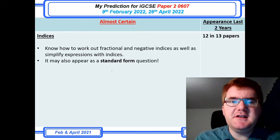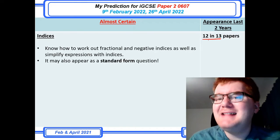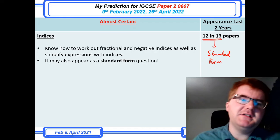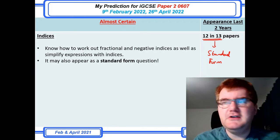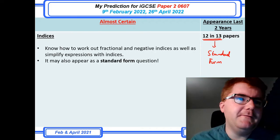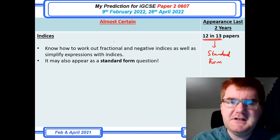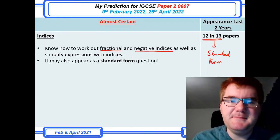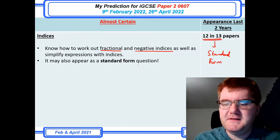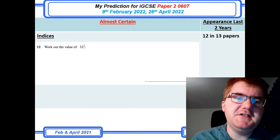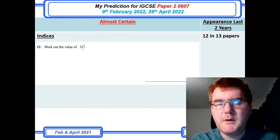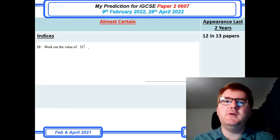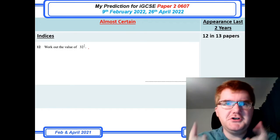On to indices — a key topic at 12 out of 13 papers, and that doesn't even include standard form, which had three separate questions. You need to know how to work out fractional and negative indices, and simplify expressions involving indices. A typical question is 32 to the power of two-fifths. There's a dedicated IGCSE indices video series that goes through these questions in great detail if you need further practice.